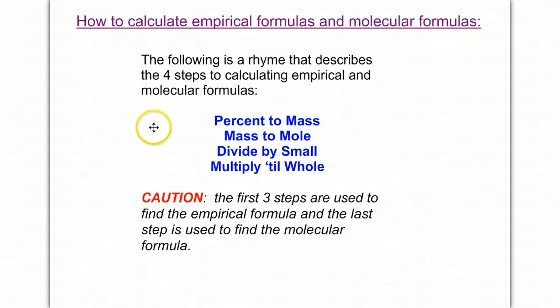So how do you calculate empirical and molecular formulas? The following is a rhyme that describes the four steps to calculating empirical and molecular formulas. Percent to mass, mass to mole, divide by small.